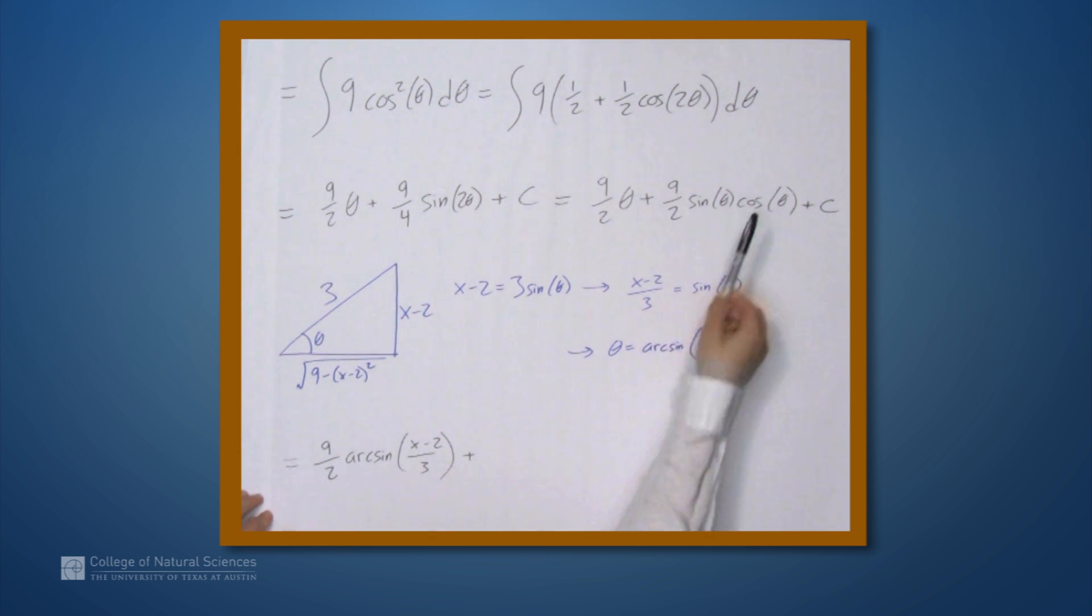Plus 9 halves times sine theta cosine theta. So this is 9 halves. Sine theta is (x - 2)/3. So 9 halves times (x - 2)/3. And cosine theta is the square root term over 3. So times the square root of 9 minus (x - 2) squared over 3 plus c.